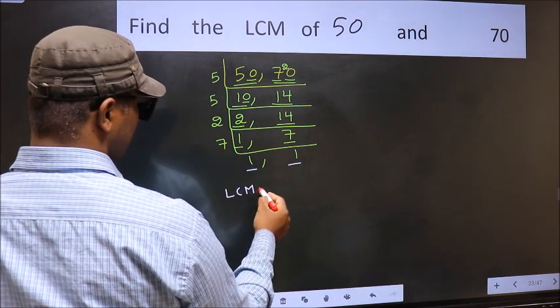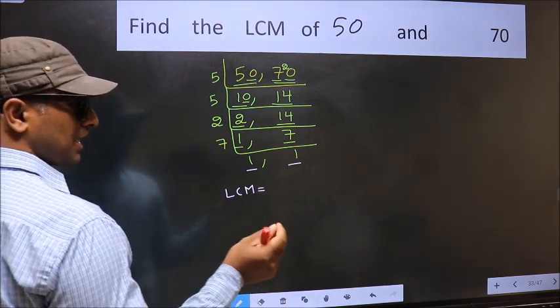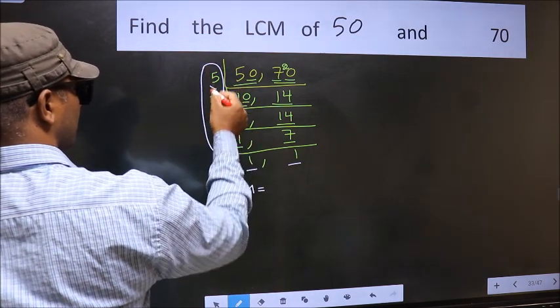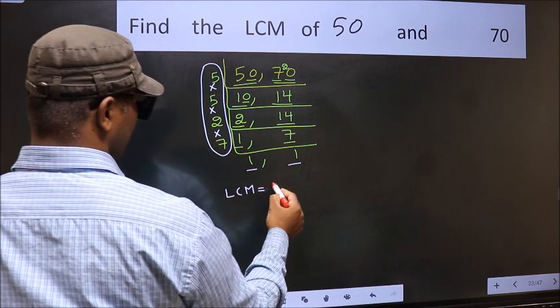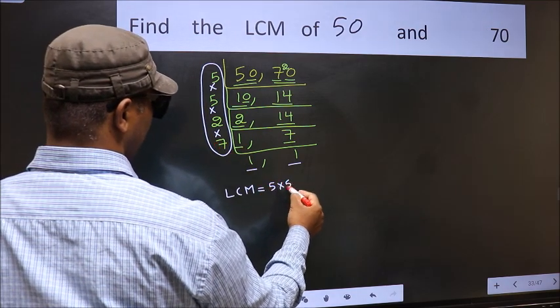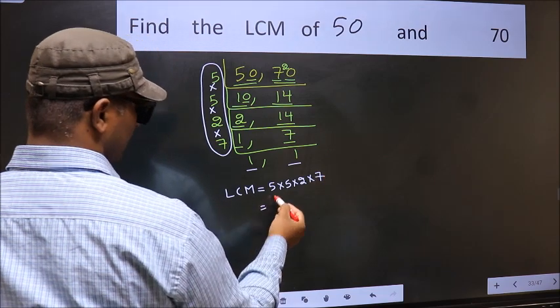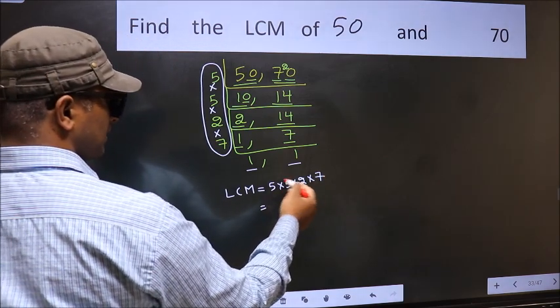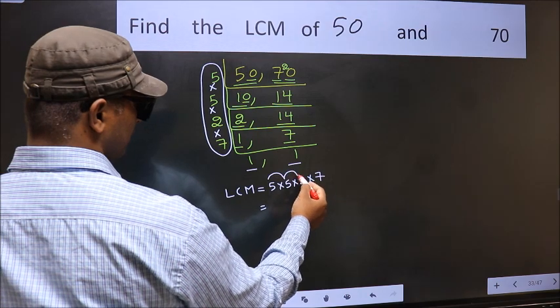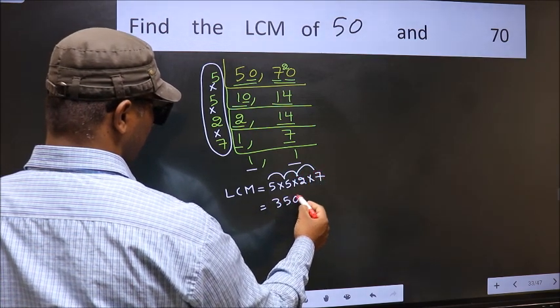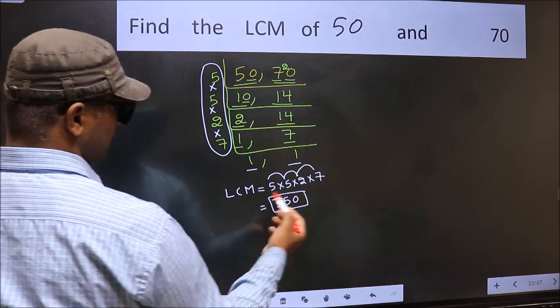So our LCM is the product of these numbers. Let us multiply these numbers: 5 times 5 is 25, times 2 is 50, times 7 is 350. This is our LCM.